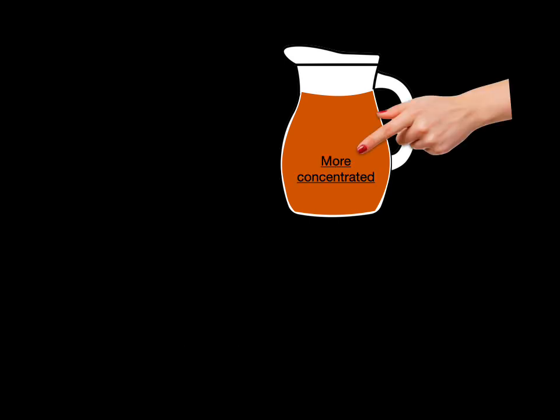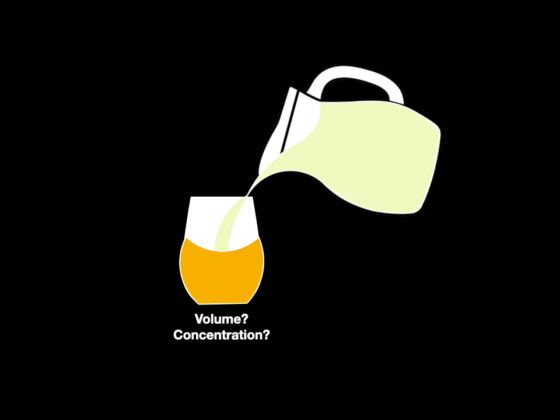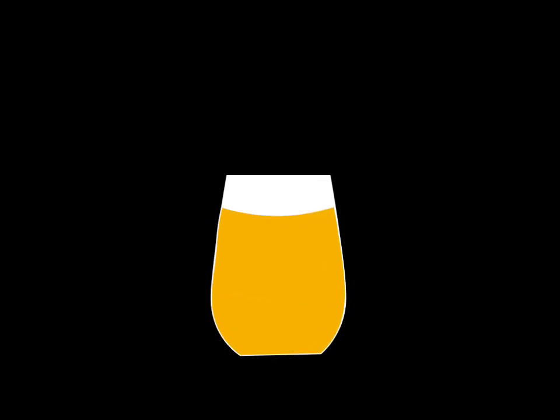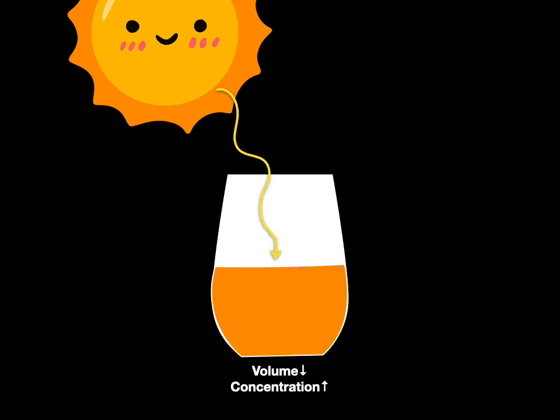Now let's take the jug of juice, dilute it, make it less concentrated, and pour it inside the cup. What happens to the volume and concentration now? The volume goes up, but now we've diluted the juice so it becomes less concentrated. Take that cup and put it in the sun. As the sun evaporates water away, what will happen to the volume and concentration? As we lose water, the volume will go down, but the number of solutes in the cup remains the same, so that solution becomes more concentrated.